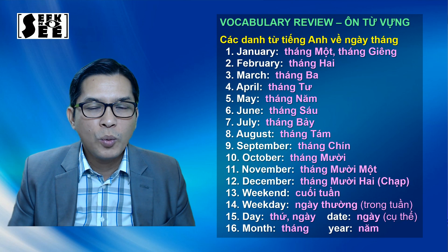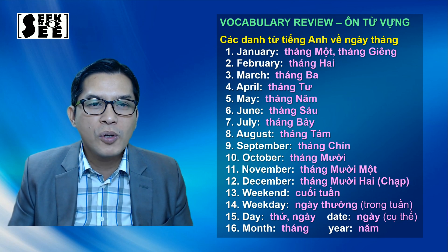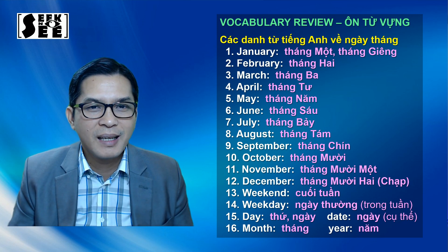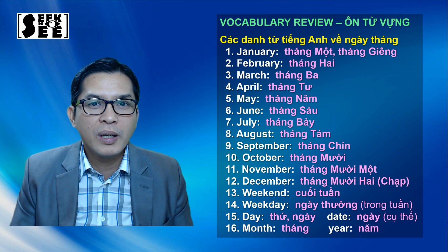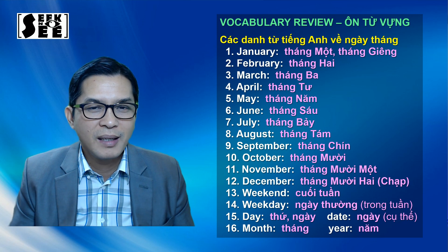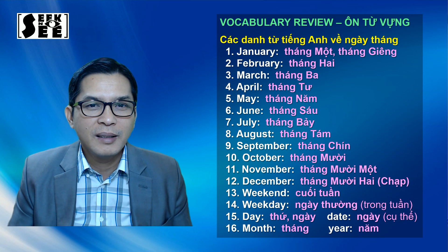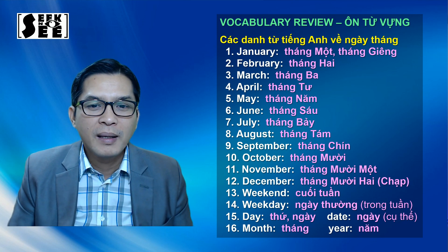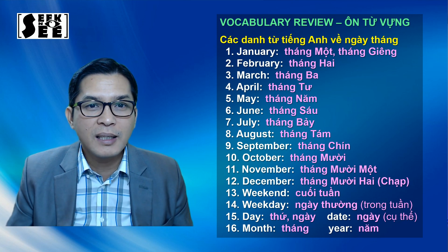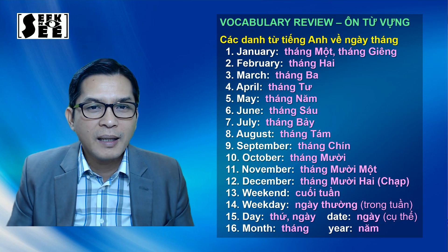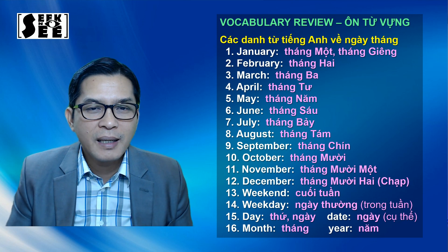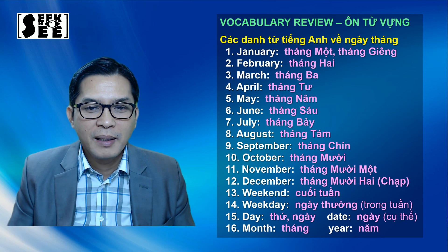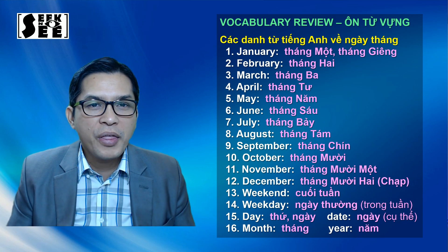Và chúng ta có từ số 13: Weekend - cuối tuần. Có 1 số người họ sẽ tách 2 từ này ra, phát âm là Weekend, lúc đó là 2 từ tách biệt ra, nhưng có khi họ đọc dính lại thành 1 từ thôi là Weekend. Âm E ở đây có 1 số người họ đọc nhanh thành âm Ơ - Weekend. Số 14: Weekday - tức là ngày thường ở trong tuần. Số 15: Day - có nghĩa là thứ, hoặc là ngày, hoặc là thời đại, thời kỳ. Số 16: Date - nói về 1 ngày cụ thể. Số 17: Month - là tháng. Số 18: Year - là năm.